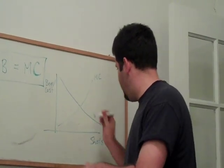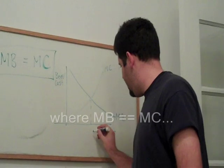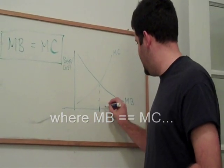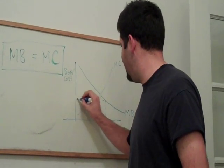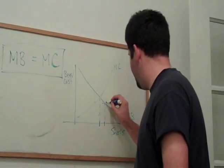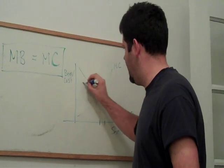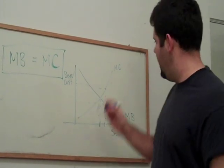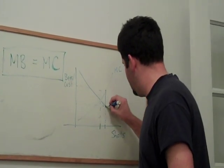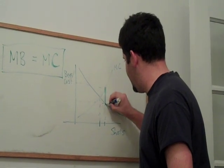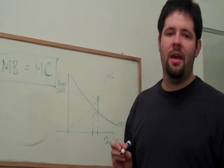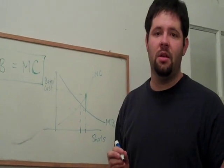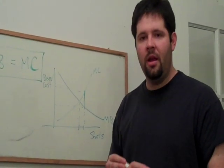But now notice that if we go from this amount here, or this number of shots, to this number of shots, the benefit of getting it to the star player is that much, but the cost is that much. In other words, the team lost that number of points.